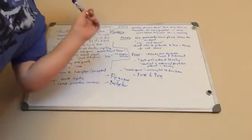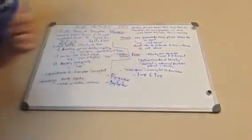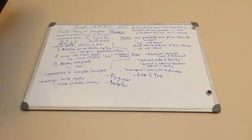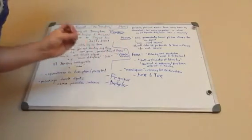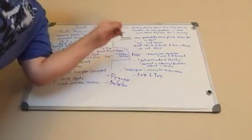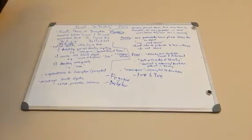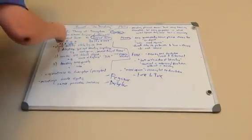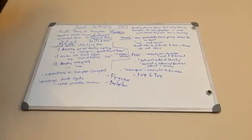Meinong says that any grammatically correct phrase denotes — any grammatically correct phrase stands for an object. Thus, a phrase picks out definitely an object, even a round square picks out definitely an object. And Russell states that it's preferable to have a theory without such issues. That's very problematic, as you might imagine. For Russell, it's all about logical form and less about grammatical form. But for Meinong, if it's grammatically correct and in the right grammatical form, then it stands for an object — it picks out a definite object, even a round square, a Pegasus, or a unicorn.